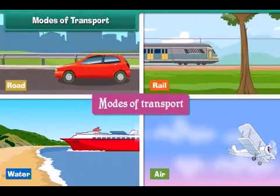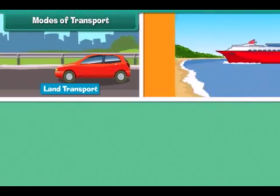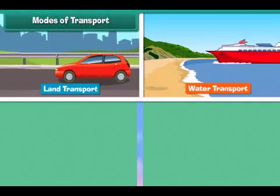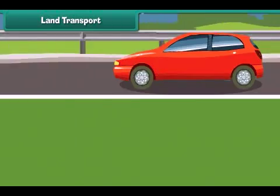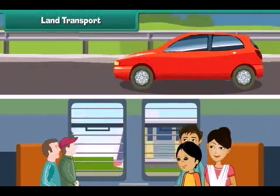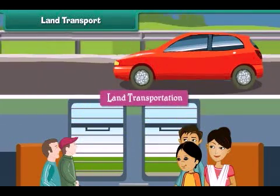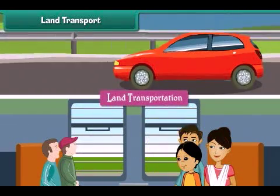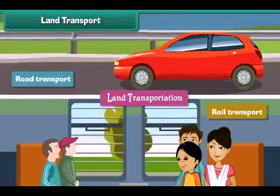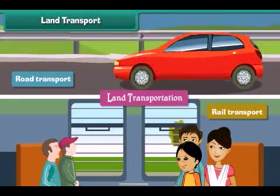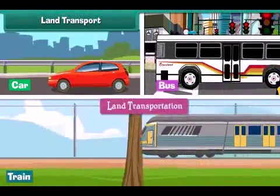Modes of transport can be broadly divided into three categories: land transport, water transport, and air transport. The movement of goods and passengers on land is known as land transport. Land transport is of two types: road transport and rail transport. The vehicles that carry passengers and goods by land, such as cars, buses and trains, are called means of land transport.